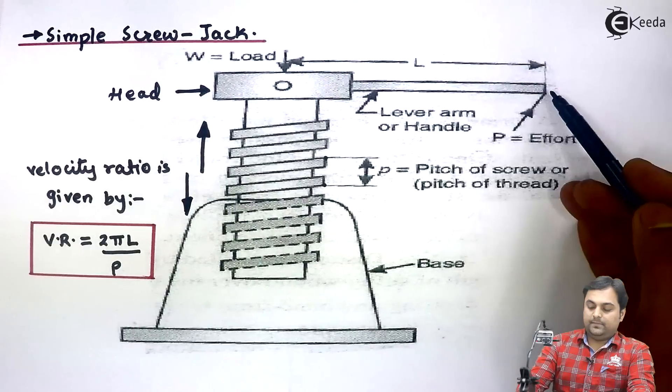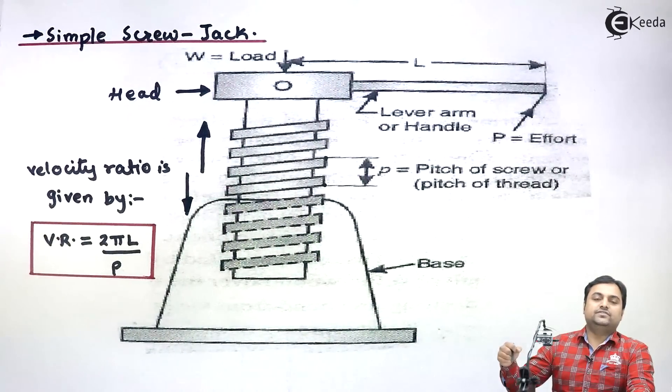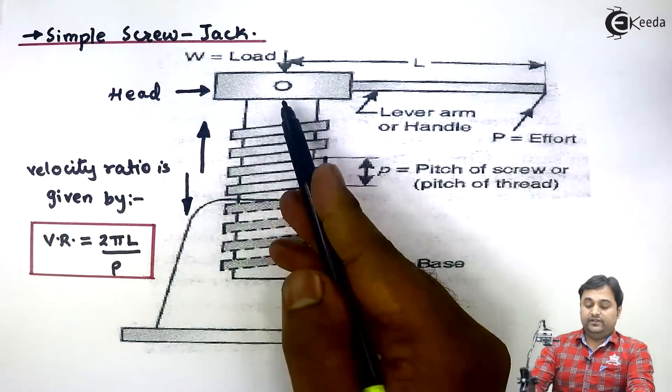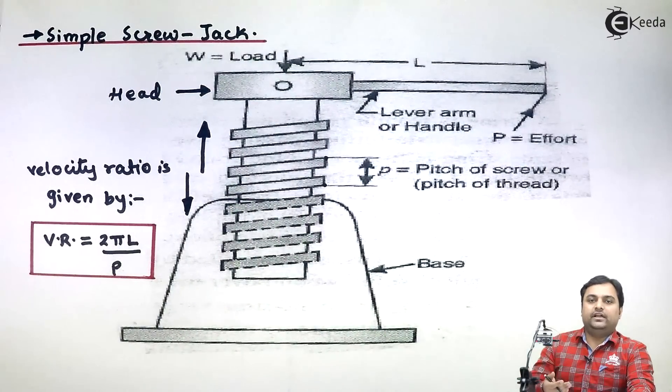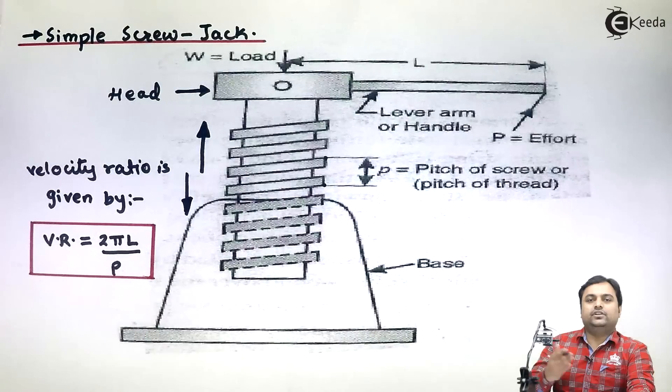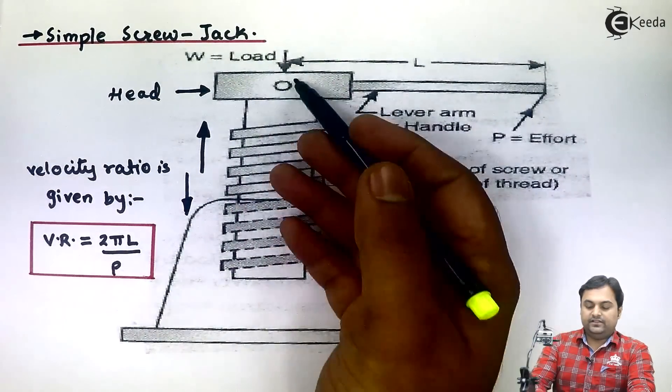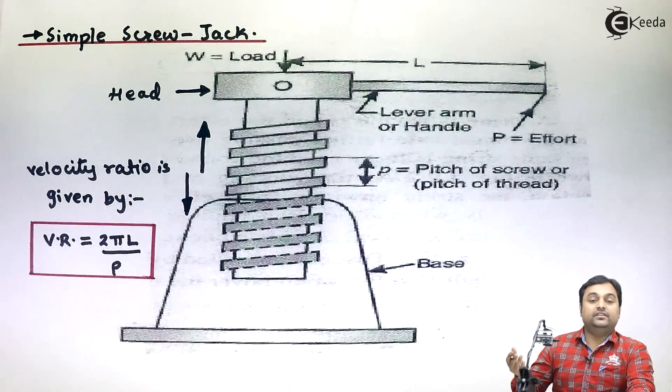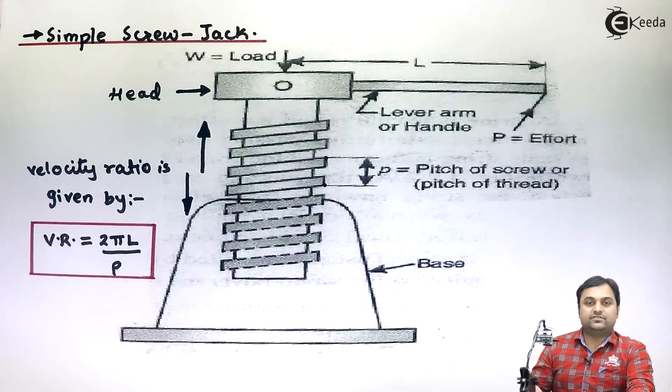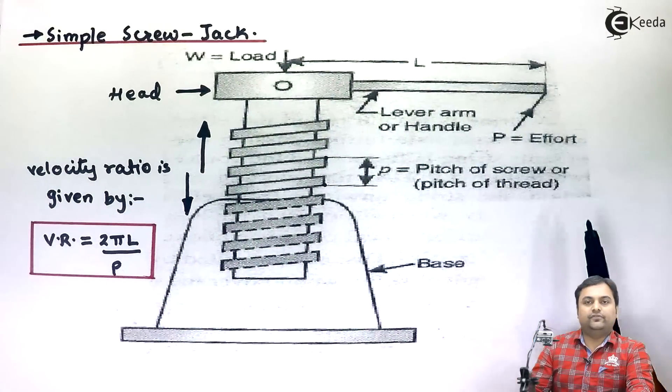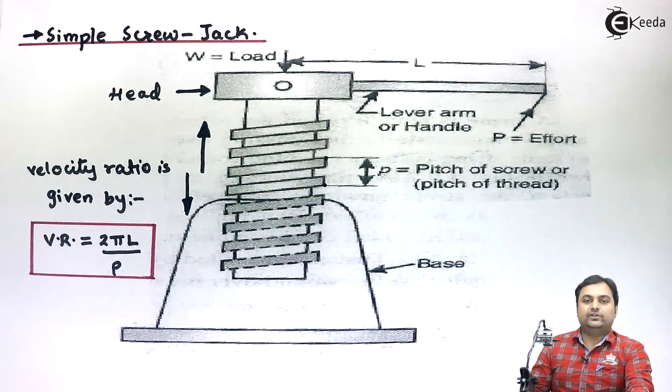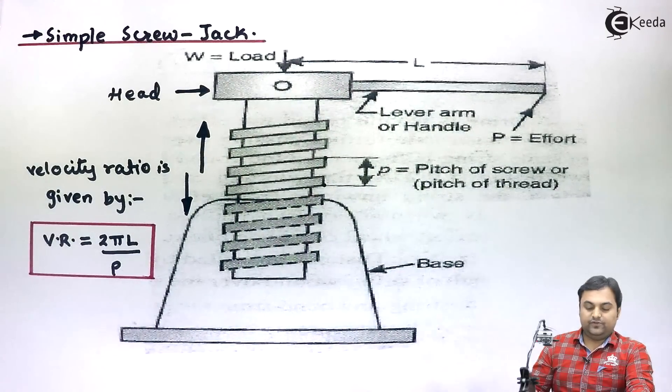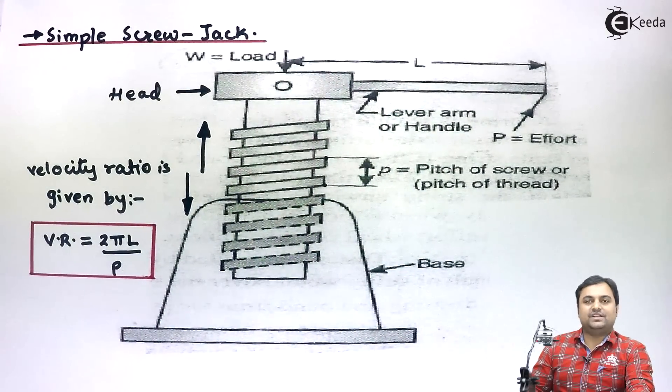We have seen by applying very small effort with the help of hand we are lifting the car. You can compare the effort which we apply with the help of hand - this would be somewhere around 300 to 400 newton - and the weight of the car can be in the form of tons. By applying small effort in newtons, we are lifting a car whose weight would be in thousands of kg. This was the explanation of simple screw jack.